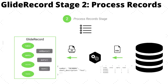Now let's look at stage two: the process record stage. Stage two starts after we execute the query method. The query is executed in MySQL, and the database returns the records matching our filter. GlideRecord maps the database fields to JavaScript properties, and the records are returned into the GlideRecord variable where we have access to the record fields as properties of the current record. One of the most important methods in stage two is the next method, which iterates over the entire list of records.